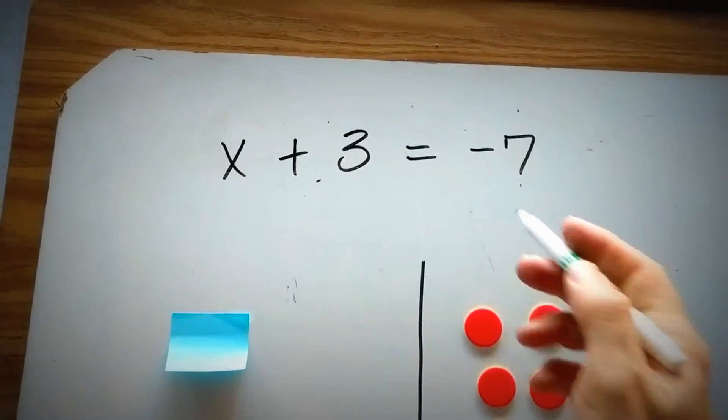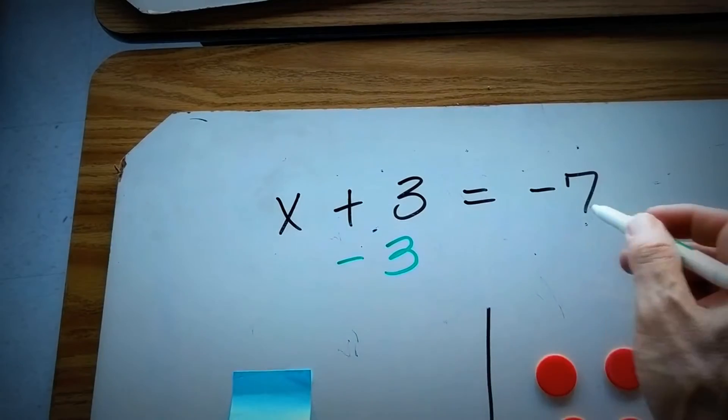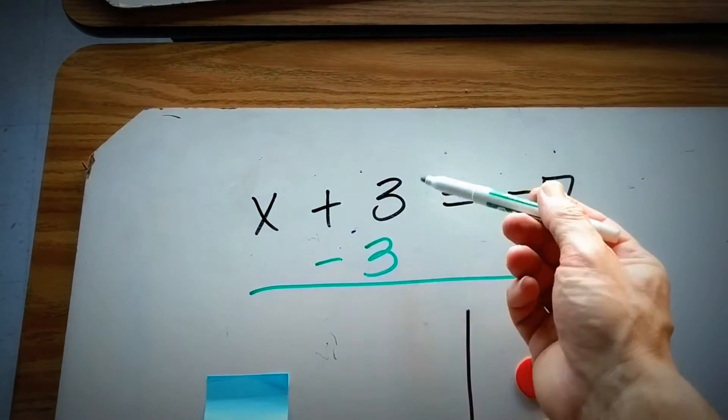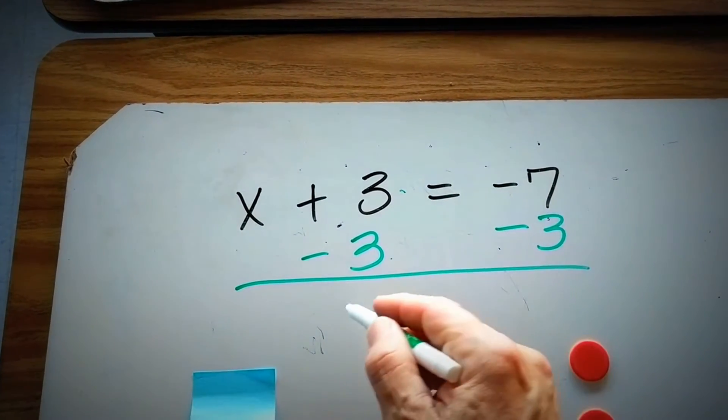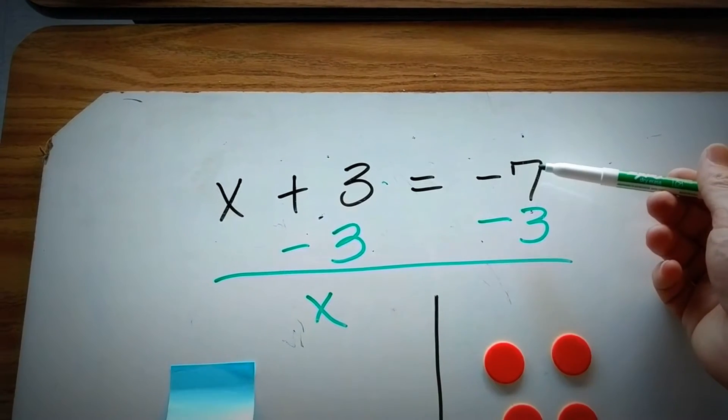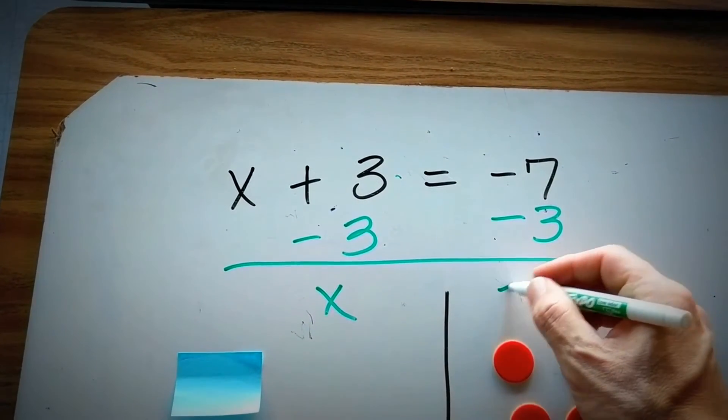You can also do this numerically. I have to subtract 3 from both sides. That's our inverse operation. 3 minus 3 is 0, so I'm just simply left with x on the left-hand side. Negative 7 minus 3 is going to be negative 10.